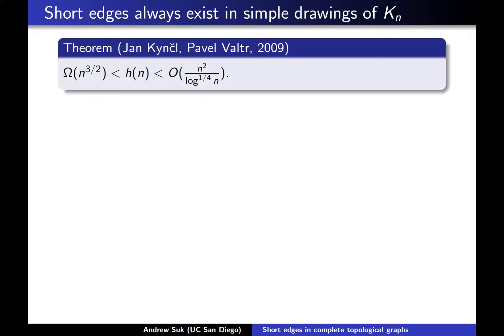This conjecture was settled shortly afterwards in 2009 by Kynchel and Valtr. They proved that short edges do indeed exist — they were able to get a polylog factor improvement over the trivial upper bound, so they can always find an edge that crosses at most a certain number of other edges. Moreover, they came up with two constructions showing that h(n) is at least n^(3/2). So they found two drawings of K_n such that each edge crosses at least n^(3/2) other edges, improving on the earlier linear lower bound from Harborth and Mengersen.